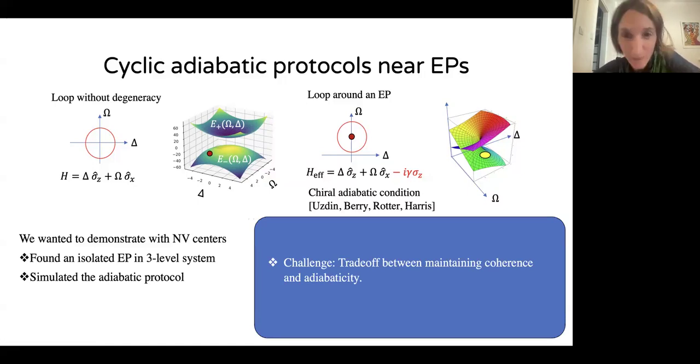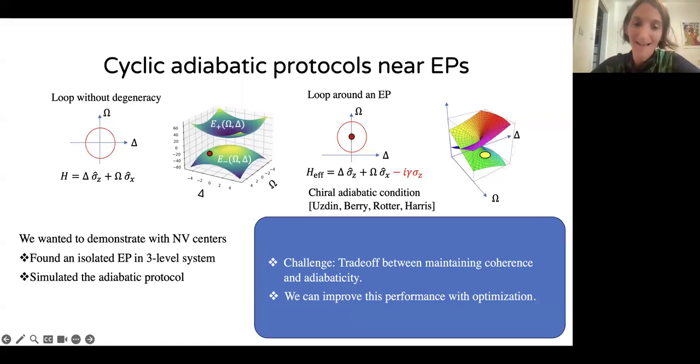We actually encountered a challenge, and that is an inherent challenge. There's a trade-off between maintaining coherence and maintaining adiabaticity. If you want to be adiabatic, you need to go slowly. But if you want to maintain coherence, you need to do things quickly enough compared to the lifetime, the coherence lifetime. So we encountered this challenge if we just did a naive loop. But now we know that we can actually improve this. We can find optimal trajectories. This is work in progress that I will not talk about. But in the time that remains, I will say that we can improve the performance with optimization. And I will move on and talk about optimizing adiabatic protocols.